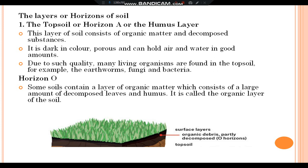Horizon O: Some soils contain a layer of organic matter which consists of a large amount of decomposed leaves and humus. It is called the organic layer of the soil.